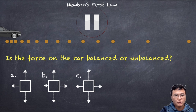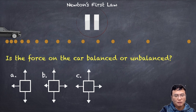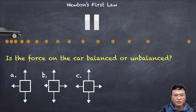Looking at the free body diagrams: option C has vertical force components that cancel each other out, so it is balanced — not the correct answer. Option D shows the car slowing down, but the car is actually speeding up, so that's not correct either. The only choice remaining is B. The vertical components cancel out, and the net horizontal force points to the right, so the car accelerates to the right, getting faster and faster. The answer is: unbalanced, and B is the free body diagram.